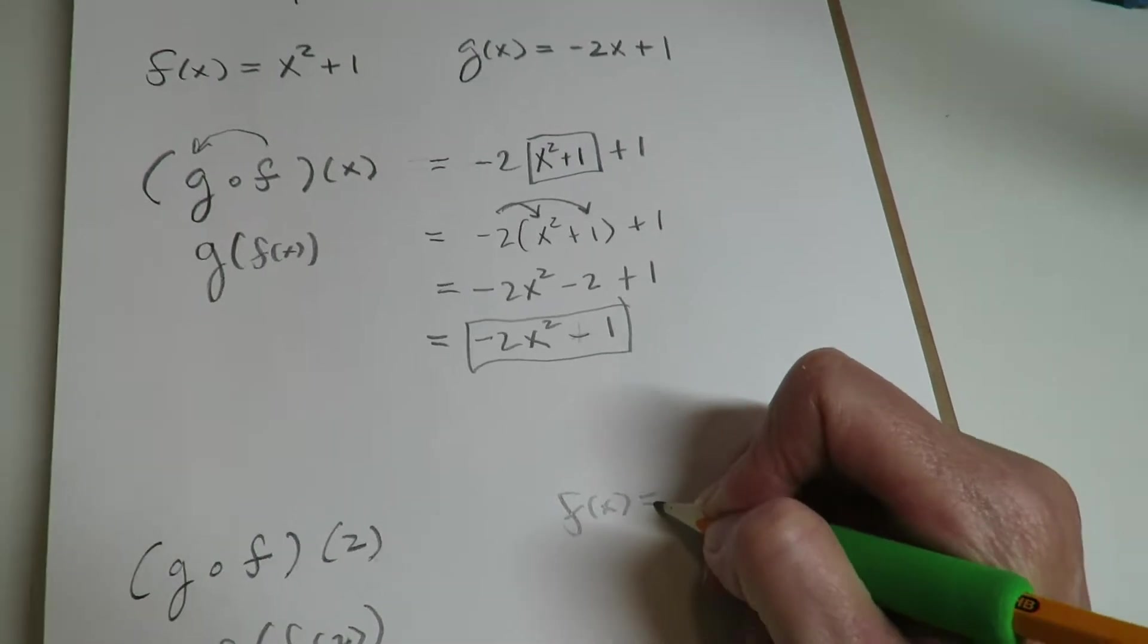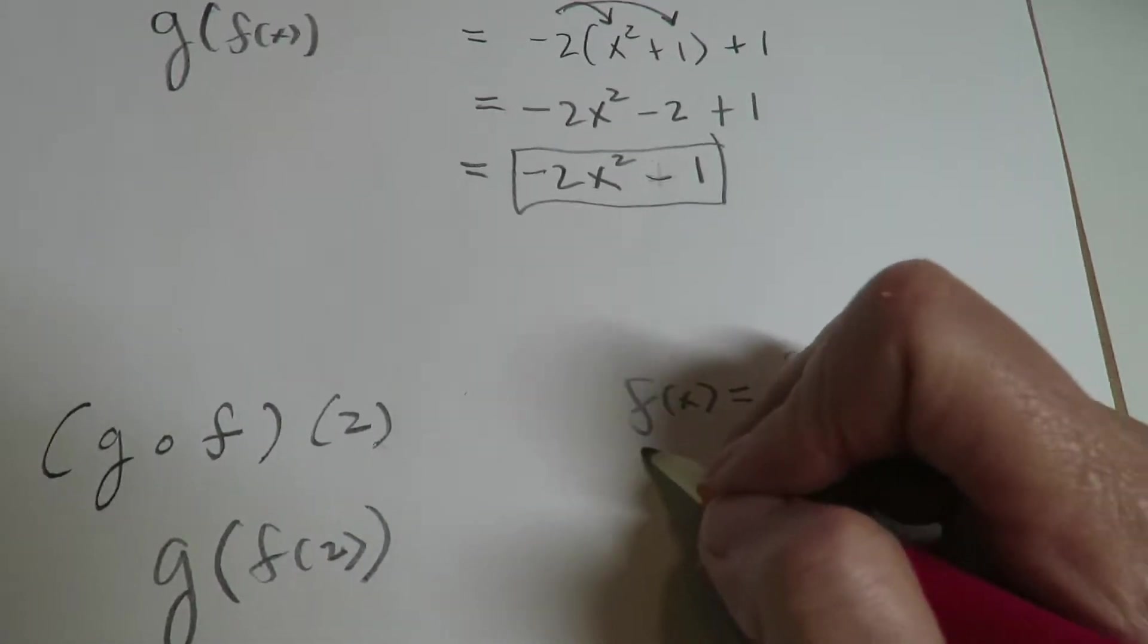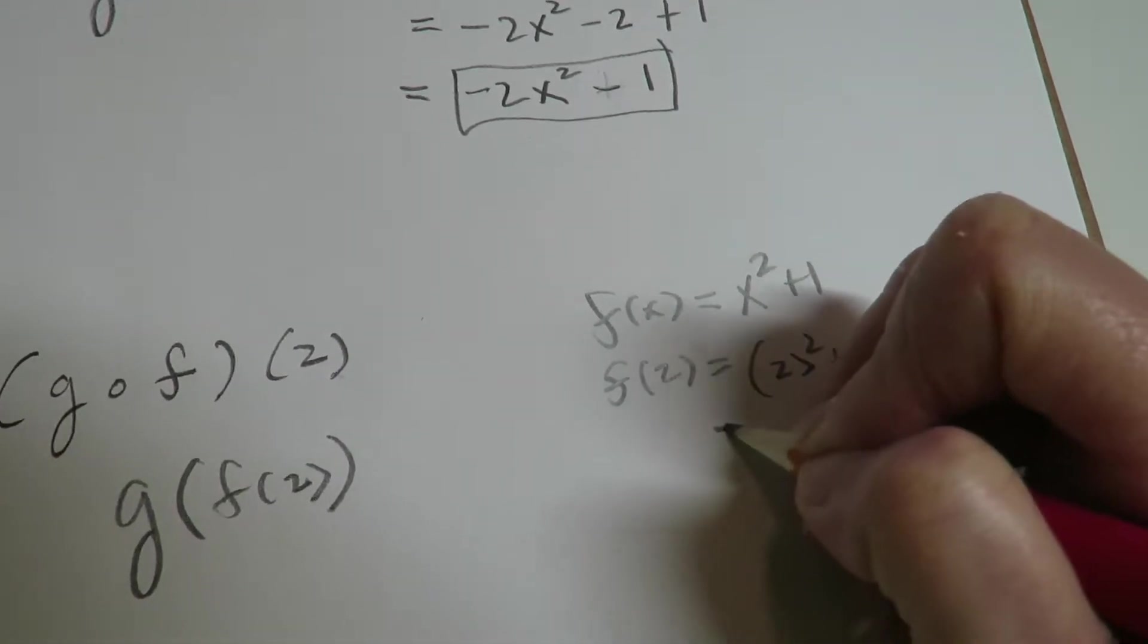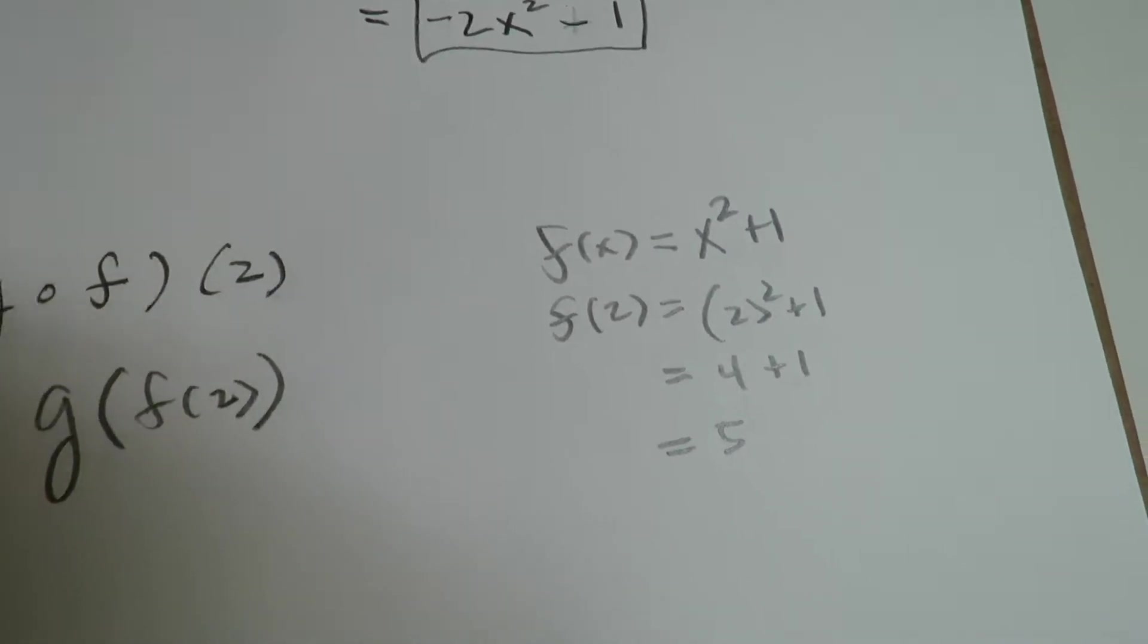Again, F of X is equal to X squared plus 1, but we're letting the domain value be a 2. And we're getting out a 5 for that.